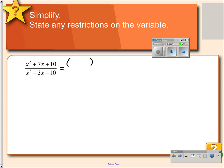So we can factor this quadratic as x plus 2 and x plus 5. And the denominator can factor as x minus 5 and x plus 2. Since we have matching factors, numerator and denominator, we can cancel those factors, x plus 2. And so we end up with our simplified form is x plus 5 over x minus 5.